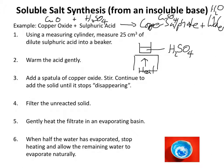Sulphuric acid is a colourless liquid. You only want to warm it, not boil it, otherwise you'll be filling the lab with sulphuric acid vapours, which is particularly unpleasant. Then you're going to add a spatula of copper oxide, which is a black powder. When you put it in, the black powder sinks to the bottom — stir it, and it's very important that you mention stirring in your description of the method.